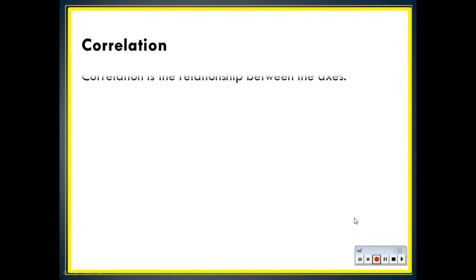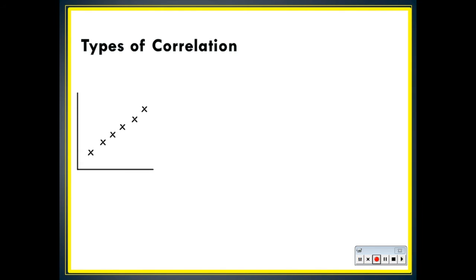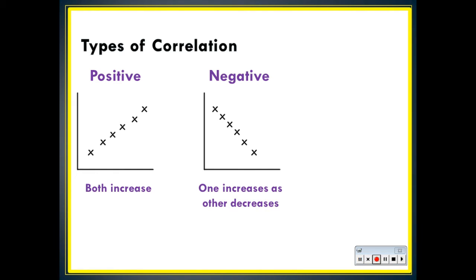Correlation. This is the relationship between the axes. There are three types of correlation. There is positive correlation. This is when both sets of data increase. There is negative correlation. And this is when one set of data increases as the other decreases. And there's no correlation, which is when there's just some random points and there's no relationship between them.